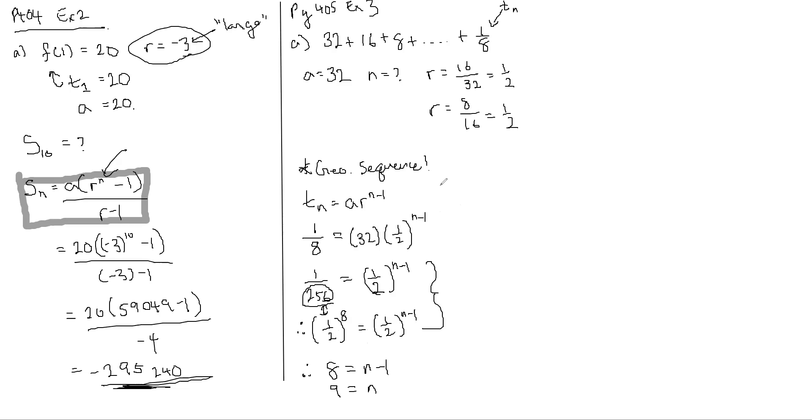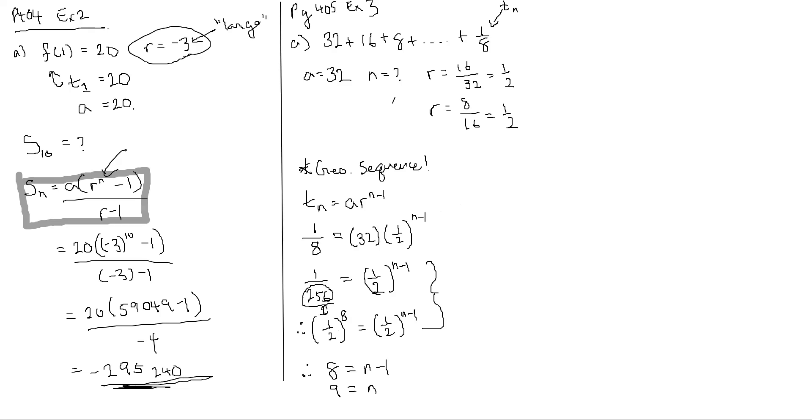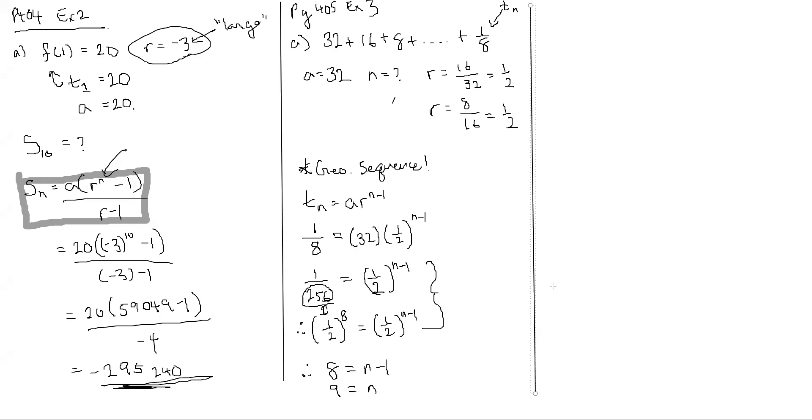This question is a word question straight from the textbook. It is example 4 on page 406. A tennis tournament has 128 entrants. A player is dropped from the competition after losing one match. Winning players go on to another match. What is the total number of matches that will be played in this tournament?